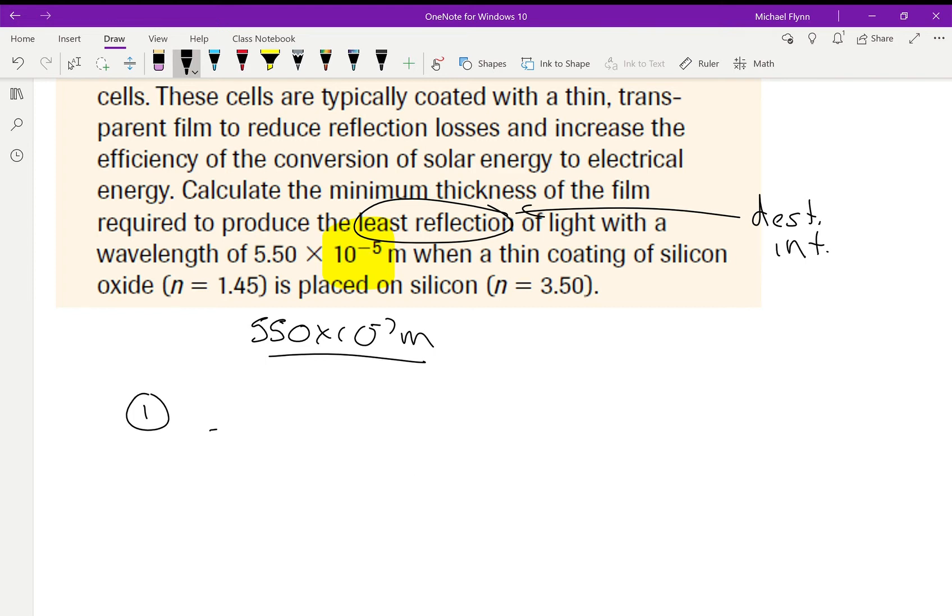So, step one. We draw our three boundaries. The top one is air. Then there's the 1.45 thin film. Okay, that's the silicon. And then on the bottom here, or silicon oxide, or whatever it is.